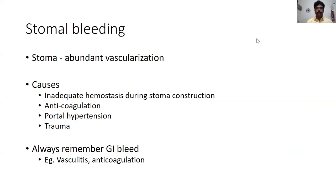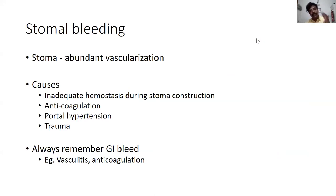Coming to the next complication: stoma bleeding. The stoma is a site of abundant vascularization — blood supply from the cut surface of the intestine, from mesenteric vessels, from subcutaneous veins, from the cut rectus muscle, and possibly from an injured inferior epigastric artery. There are multiple sources of bleeding in the immediate postoperative period. The usual cause is inadequate hemostasis during stoma construction, as discussed in the previous lecture.